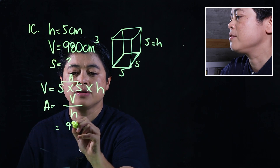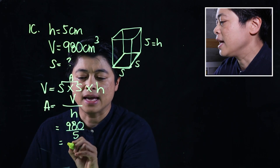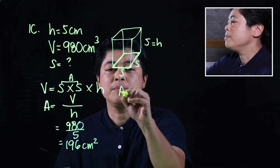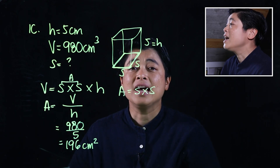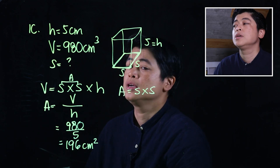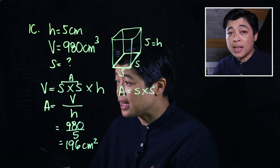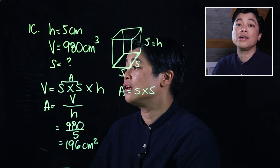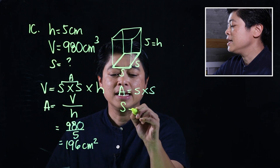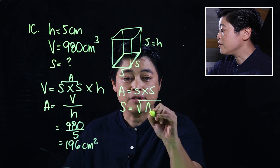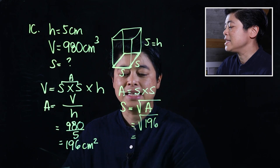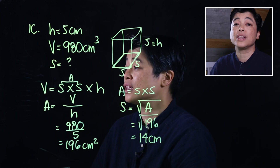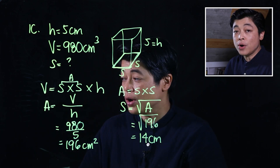Taking 980 divided by 5 gives an area of 196 centimeters squared. Since the area equals side times side, we now use the concept of square root — which is newly introduced here, whereas in Grade 5 students had to work out the multiplied values manually. So the side equals the square root of 196, which we can confirm with the calculator gives 14 centimeters.